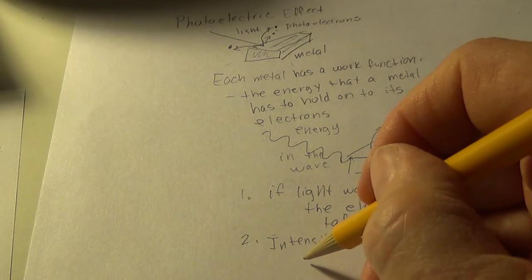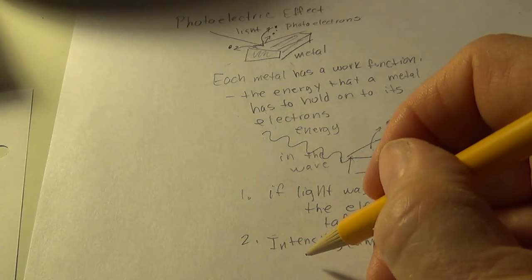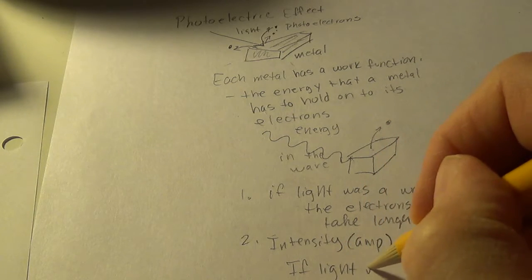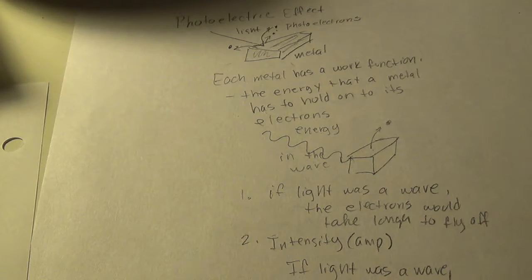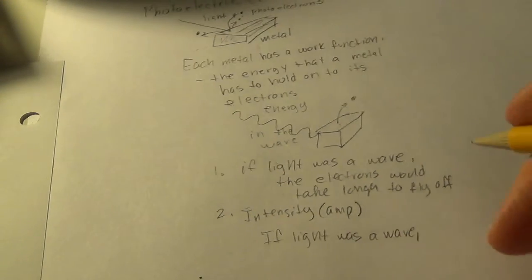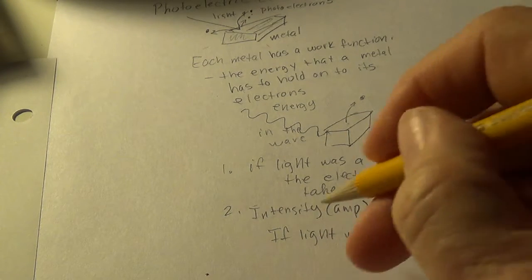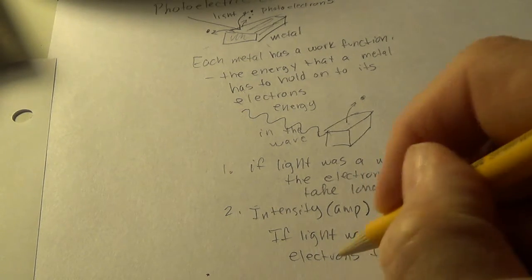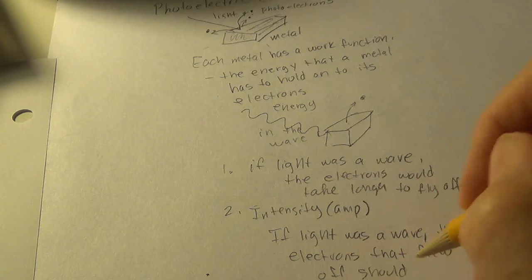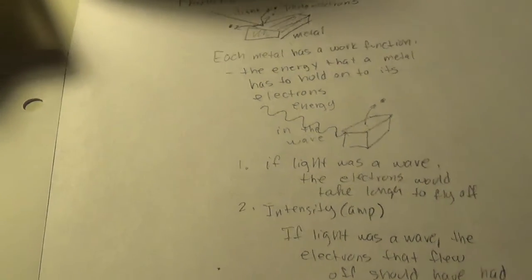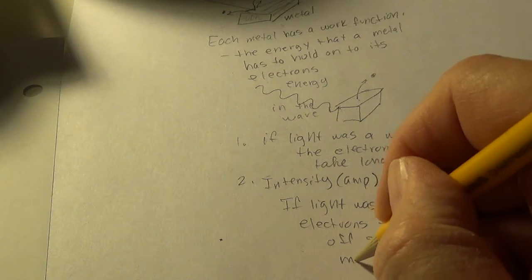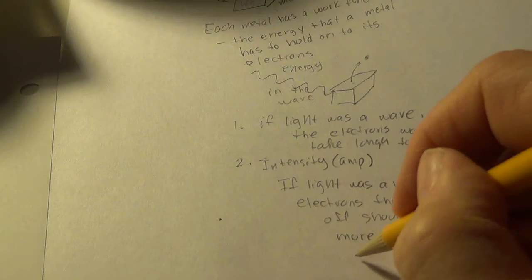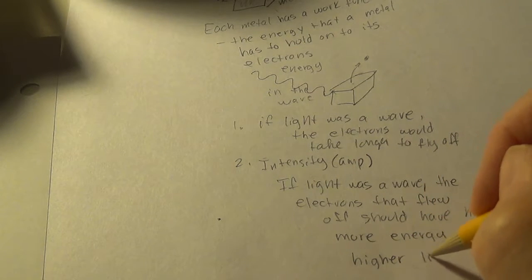So, the more intense the light, the greater number of electrons, but the energy of the electrons was independent of the light intensity. So, in other words, number two, instead of trying to unpack that in any length, let's just say, or any depth, let's say this. If light was a wave, if light was a wave, they should have had more energy.